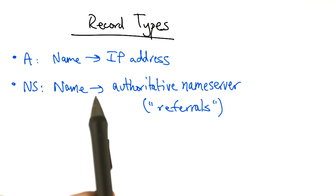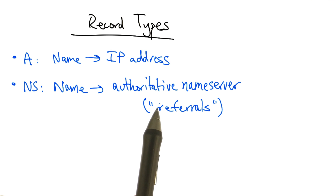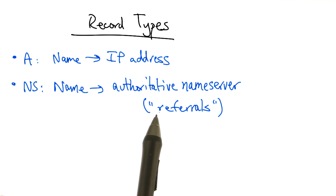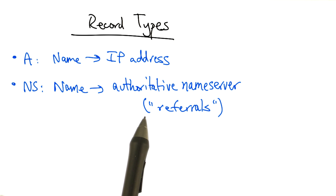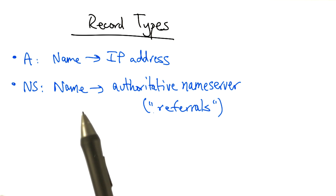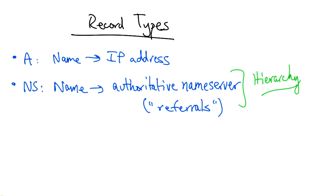it doesn't specifically know the answer, but it can issue a name server reply or an NS record referring the resolver to a different name server that could be responsible for that part of the domain name space. This allows the domain name system to be implemented as a hierarchy.